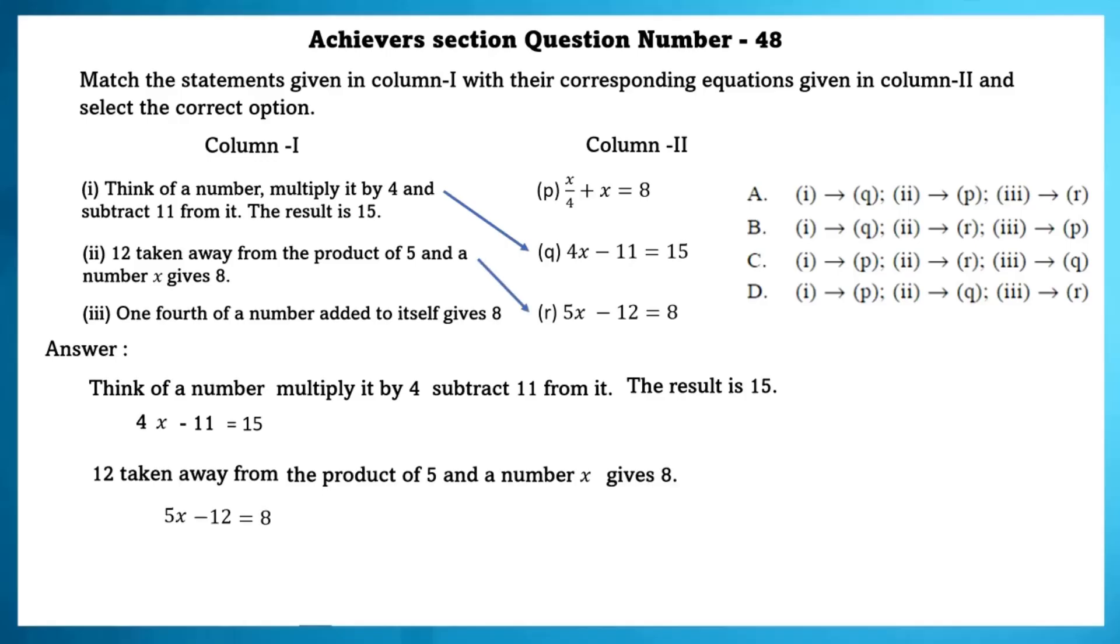The product of 5 and a number x and 12 taken away from the product of 5 and a number x gives 8. Yes, 5x minus 12 is equal to 8. This is option R. Third one, one-fourth of a number added to itself gives 8. This matches with P.